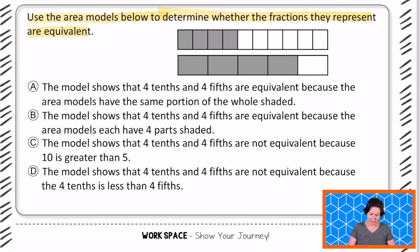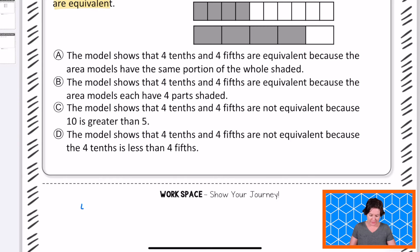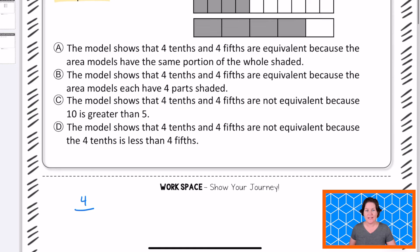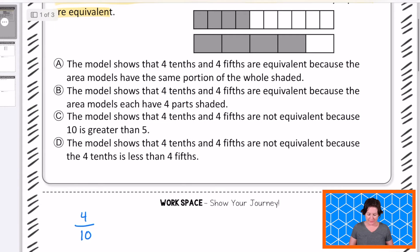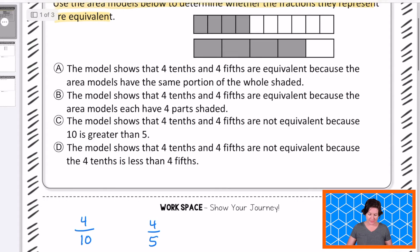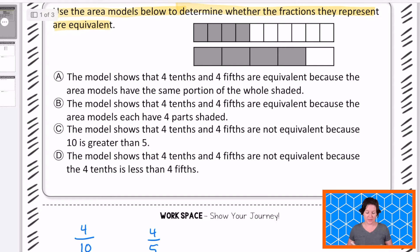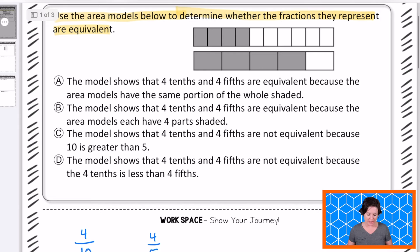So let's see what that first fraction is. For the first fraction, I see four parts shaded in out of how many all together? 10, right? 4 tenths for that first one. And the next one, we also have four parts shaded in out of how many parts in all? Five. So we have 4 tenths on top and 4 fifths on the bottom, and they are not equal.